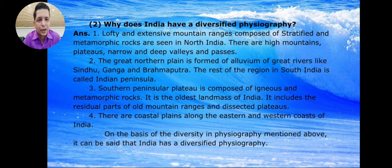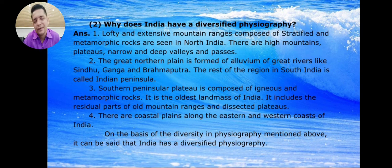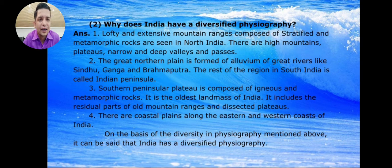Now we come to the coastal area — the sea coast. There is a coastal plain along the eastern and western coast of India. India also has an eastern coastal plain and a western coastal plain. On the basis of the diversity of physiography mentioned above, it can be said that India has a diversified physiography.